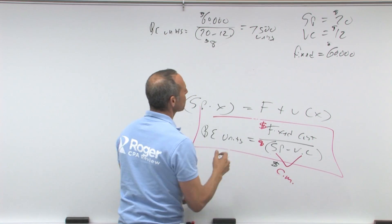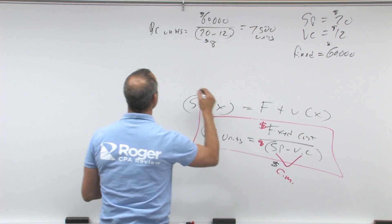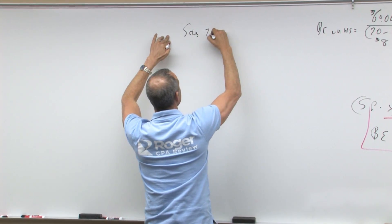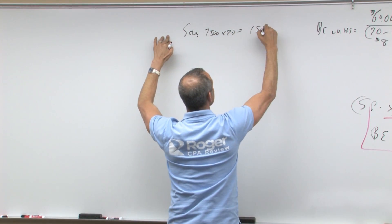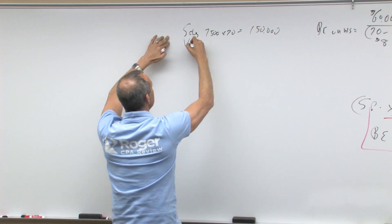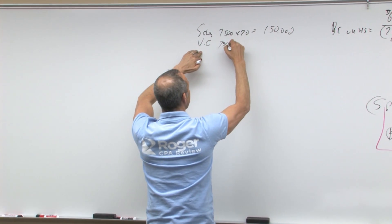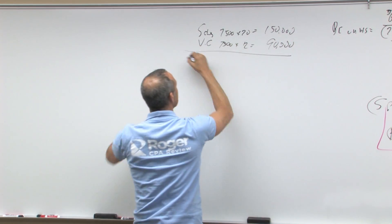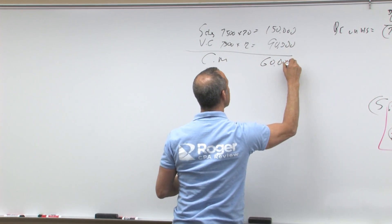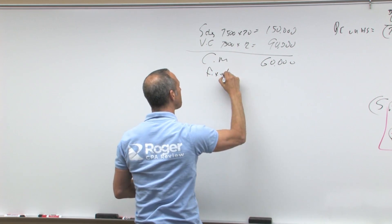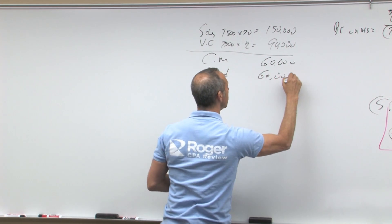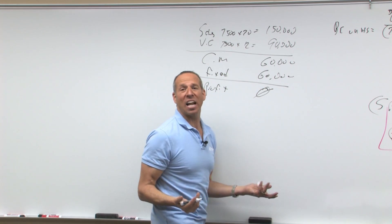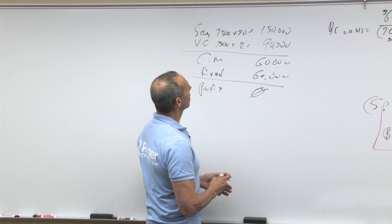Let's see if this really works out. So let's come back over here. We'll do an income statement. Sales are going to be 7,500 at $20, which is $150,000. Variable costs are going to be 7,500 at $12, which is $90,000. That gives me contribution margin of $60,000. I've got fixed costs of $60,000. I've got profit of zero. Profit of zero. I broke even. I got no money. I got no friends.